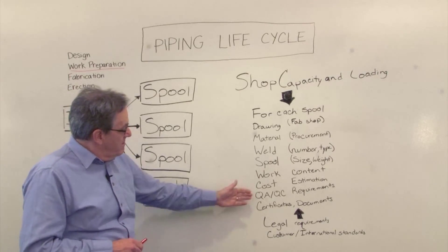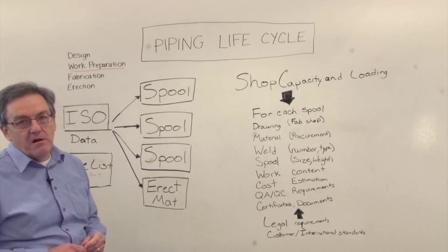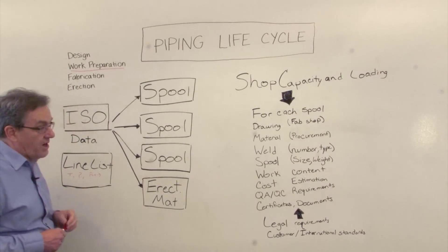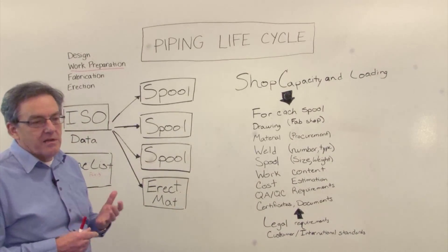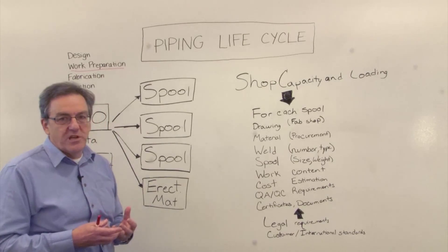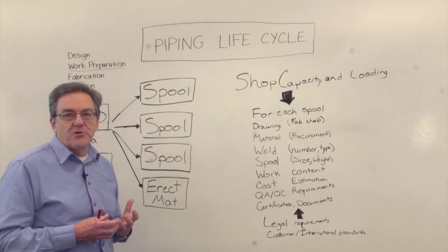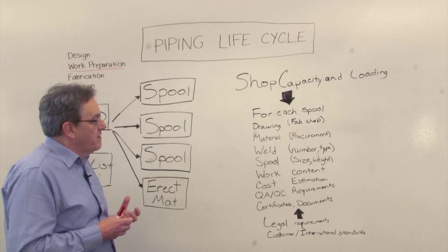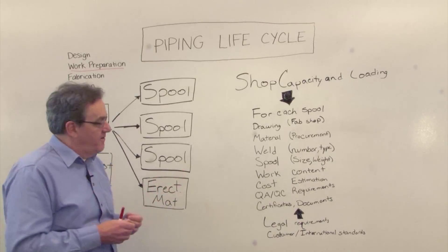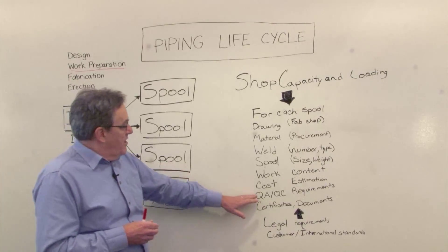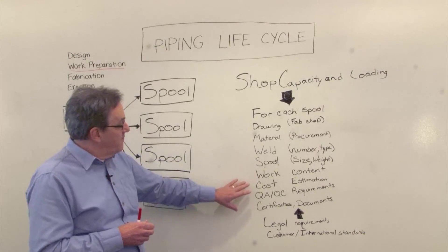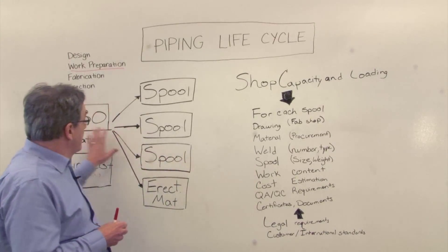Very importantly, we can determine quality requirements — what testing we have to do. We can start with the information in the line list, because that tells us for this particular combination of operating temperature, pressure, fluid, and material what the testing requirements might be. A high-pressure line with a very toxic fluid needs more rigorous testing than a low-pressure line containing fire water. So the quality requirements and testing protocols can all be derived from information that came into our process.